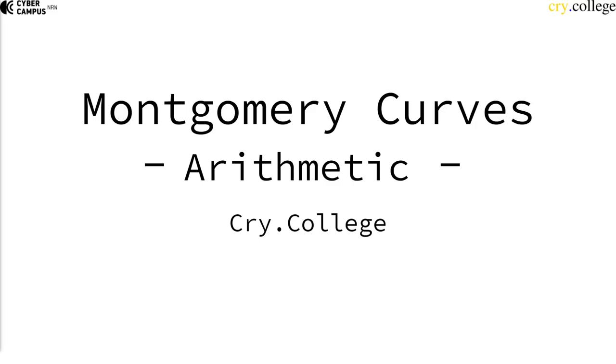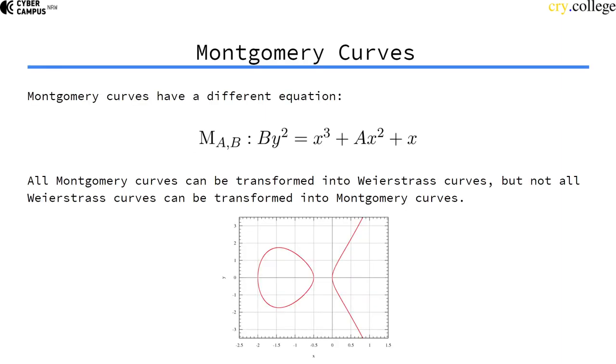Let's look at a new form, a new type of elliptic curves, namely the Montgomery curves, also named after Peter Montgomery. Montgomery curves have a different curve equation. Now that's a bit mean because I told you that all curves are Weierstrass curves. Weierstrass curves are the most general form of elliptic curves. So all Montgomery curves can be transformed into Weierstrass curves, but not all Weierstrass curves can be transformed into Montgomery curves.